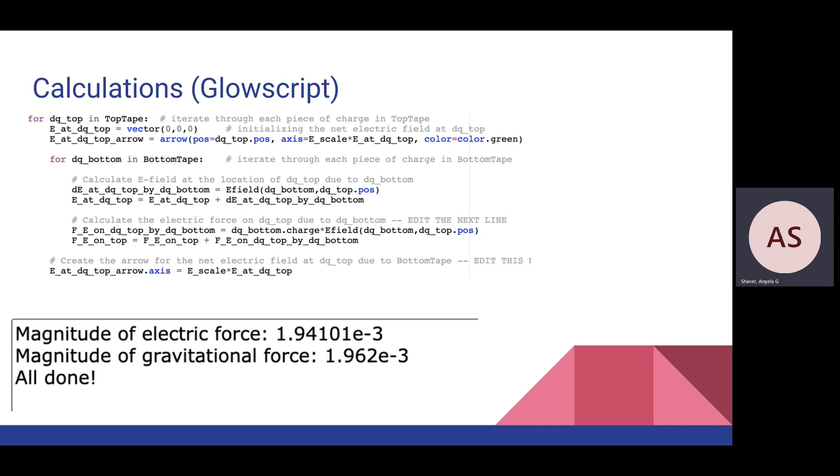The magnitude of the electric force was about equal to the magnitude of the gravitational force. This makes sense because since the tape was not moving, the net force should be about zero, and the two forces cancel each other out. Both forces were about 1.95 × 10^-3 Newtons.